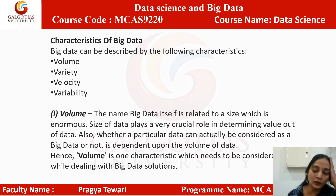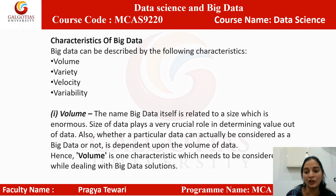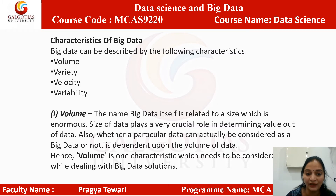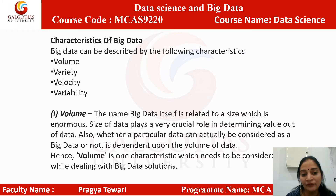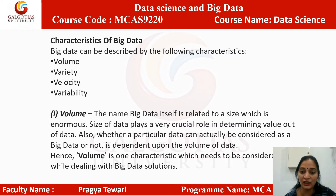There are four main characteristics of big data — we cannot define big data without these characteristics. Big data can be described by four V's: Volume, Variety, Velocity, and Variability. Volume: the name 'big data' itself is related to enormous size. The size of data plays a very crucial role in determining value from data, and whether particular data can actually be considered as big data is dependent upon the volume of data.